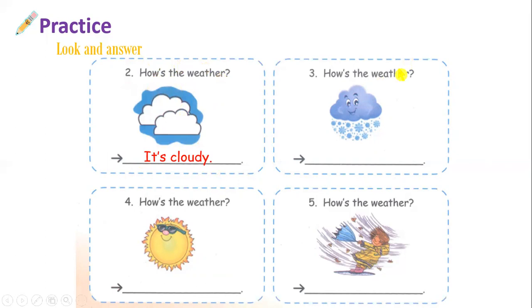Number three — how's the weather? Ở đây chúng ta nhìn thấy ở bức tranh này có những bông tuyết. Bông tuyết, tức là đây là dạng thời tiết có tuyết, có tuyết là snowy. Cách trả lời của câu hỏi how's the weather là — can you tell me your answer? That's good. It's snowy.